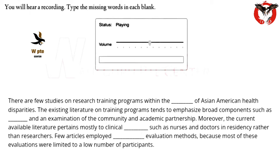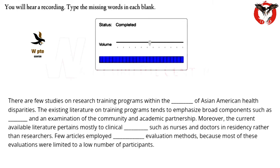There are few studies on research training programs within the realm of Asian American health disparities. The existing literature on training programs tends to emphasize broad components such as mentorship and an examination of the community and academic partnership. Moreover, the current available literature pertains mostly to clinical practitioners such as nurses and doctors in residency, rather than researchers. Few articles employed quantitative evaluation methods, as most of these evaluations were limited to a low number of participants.